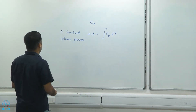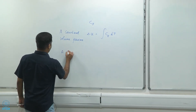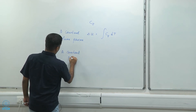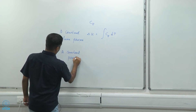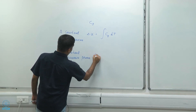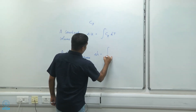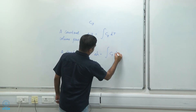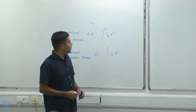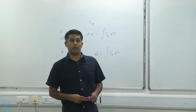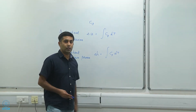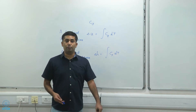Similarly, for a constant pressure process, delta H is equal to the integral of Cp dT. This is very helpful because it gives me the change in enthalpy of the system as a function of Cp.